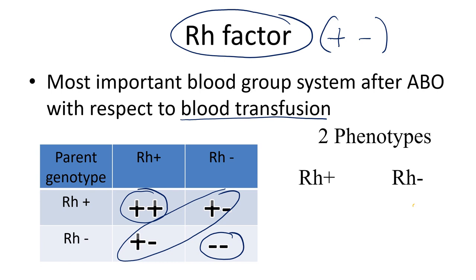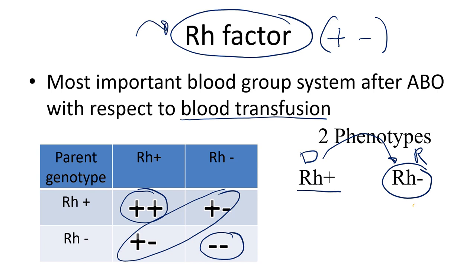Since RH positive acts as a dominant allele which masks the recessive RH minus allele, RH factor is known to be inherited in the Mendelian fashion, as the dominant allele masks the recessive allele.